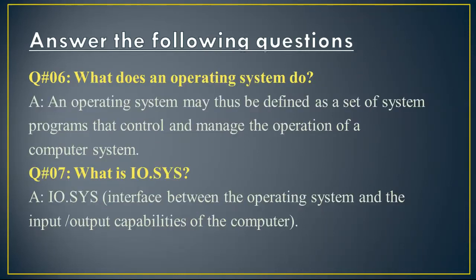Question number 6 is: what does an operating system do? Answer: an operating system may thus be defined as a set of system programs that control and manage the operation of a computer system.